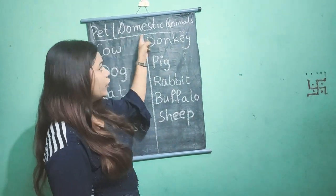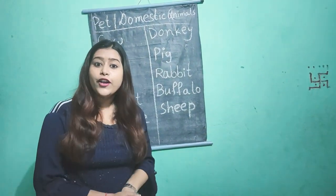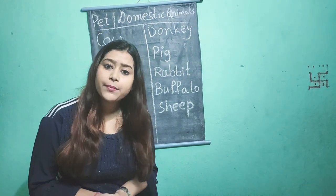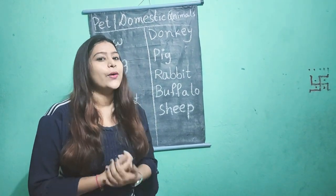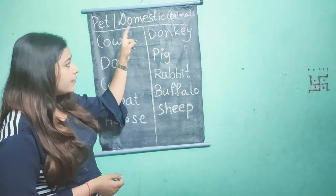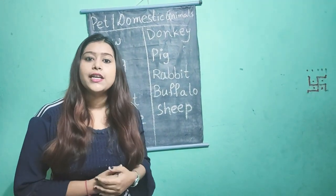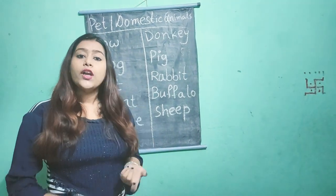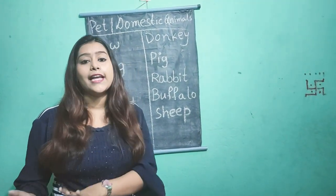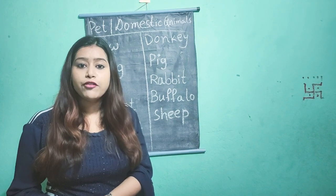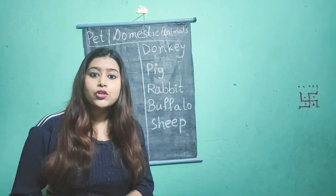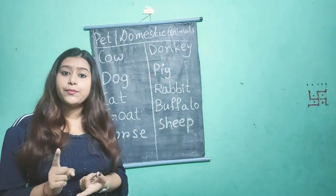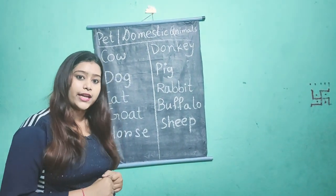Now pet or domestic animals. Already we have learned about wild animals. So what are the pet animals? The animals who live with us are known as pet or domestic animals. When we give food, then only they can eat. Like always we give food to dog, cat, right? So they are known as pet or domestic animals — the animals who live with us only.